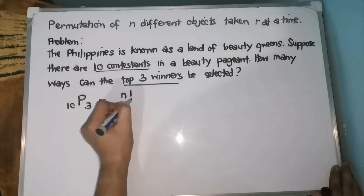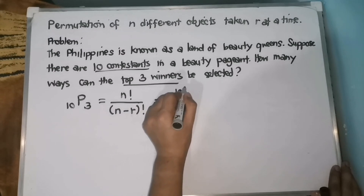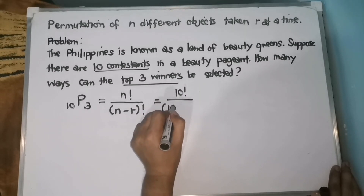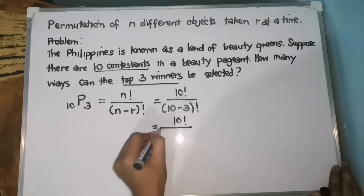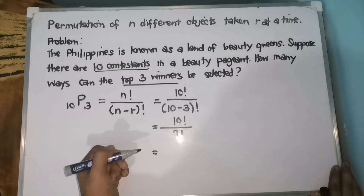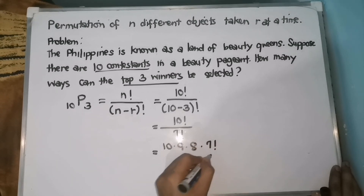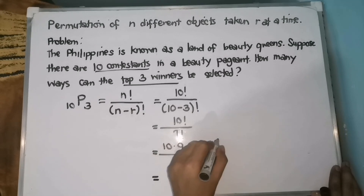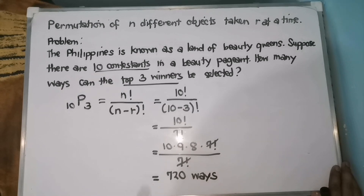Using the formula, N factorial over N minus R factorial, we substitute: 10 factorial over 10 minus 3 factorial, which is 10 factorial over 7 factorial. We rewrite 10 factorial as 10 times 9 times 8 times 7 factorial, all over 7 factorial. The 7 factorials cancel, and 10 times 9 is 90, times 8 is 720. Therefore, there are 720 ways the Top 3 winners can be selected out of 10 contestants.